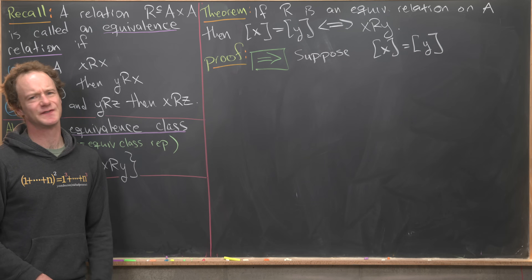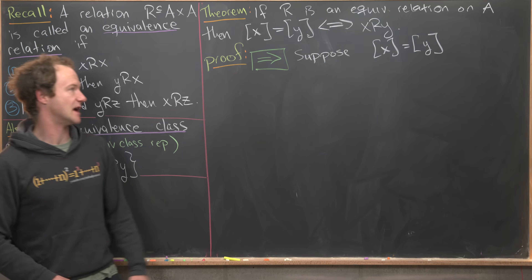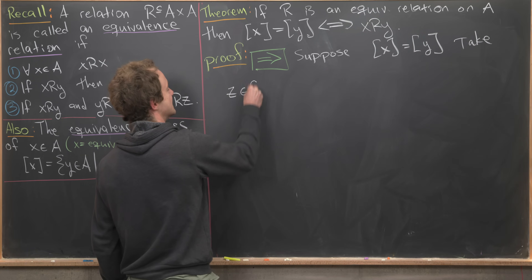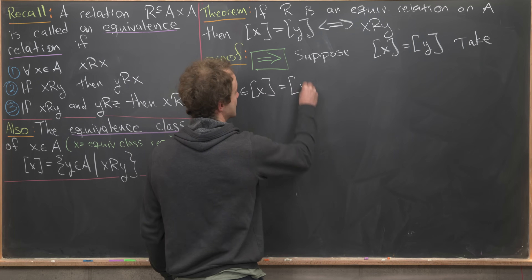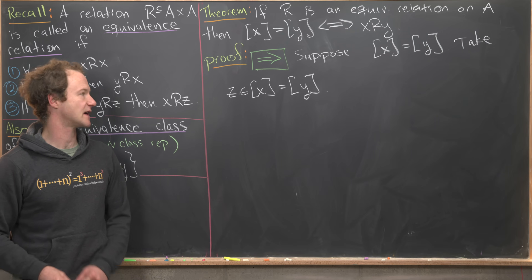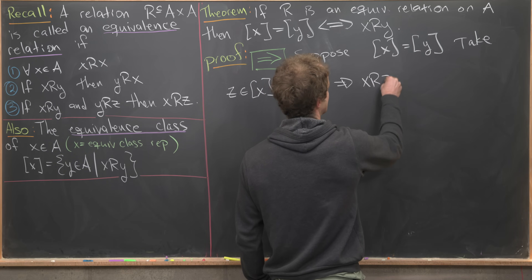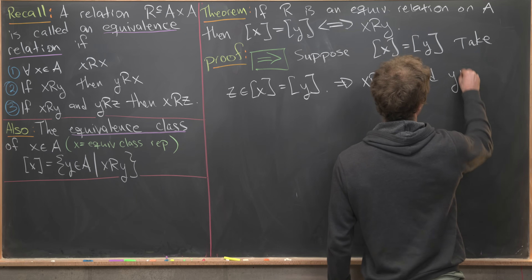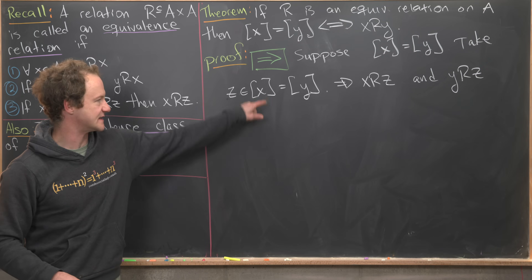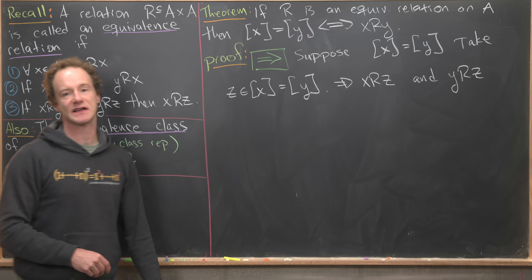If these two equivalence classes are equal, it's very easy to find an element in both of them since they're the same. Let's take an element Z in the equivalence class of X — it's obviously in the equivalence class of Y as well, given they are the same set. This implies that X is related to Z and Y is related to Z: X is related to Z because Z is in the equivalence class of X, and Y is related to Z because Z is in the equivalence class of Y.